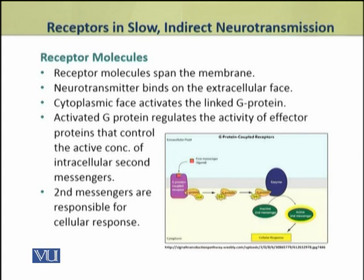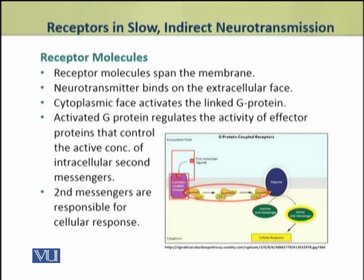The receptor molecule is a large molecule that spans the membrane. The neurotransmitter binds at the extracellular face of this receptor molecule. The cytoplasmic face of the receptor activates the G protein linked to it. The activated G protein regulates the activity of an effector protein, which may be an enzyme. This enzyme controls the concentration of a second messenger, and the second messengers are responsible for the cellular response.